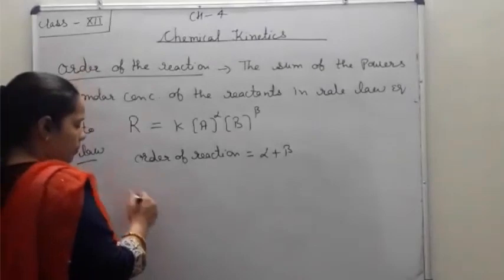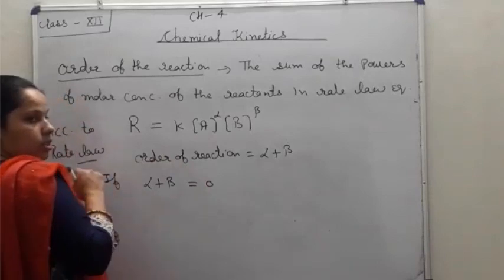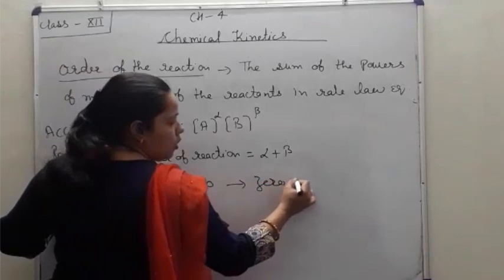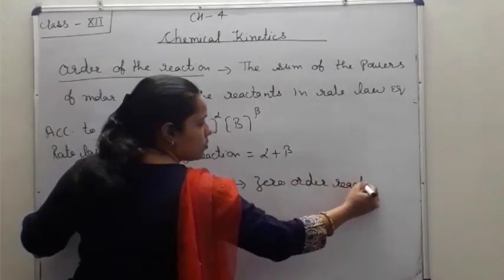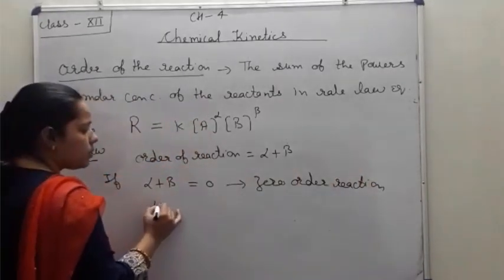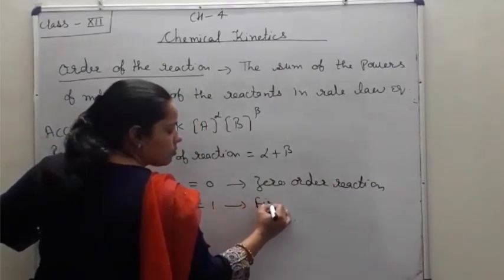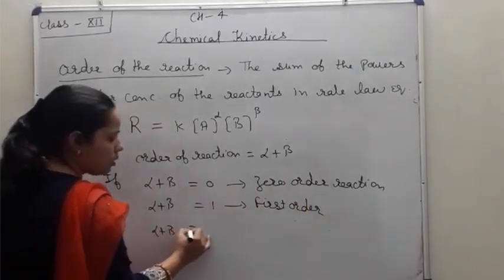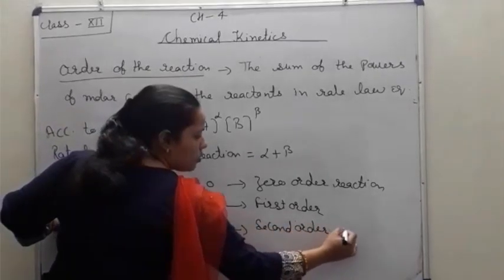If the sum of alpha plus beta is equal to zero, it is called a zero order reaction. If alpha plus beta equals one, the reaction is first order. If alpha plus beta equals two, then the reaction is second order, and so on.